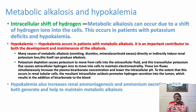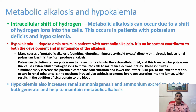Metabolic alkalosis and hypokalemia have a very strong bidirectional relationship. Hypokalemia can lead to metabolic alkalosis, and metabolic alkalosis can produce hypokalemia. So any patient with hypokalemia can develop alkalosis, and any patient with severe alkalosis can develop hypokalemia. Metabolic alkalosis can occur due to a shift of hydrogen ion into the cells, which occurs in patients with potassium deficit.